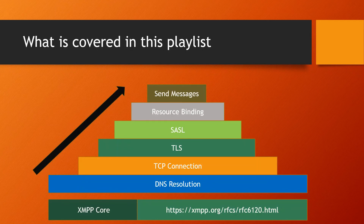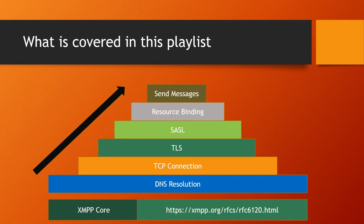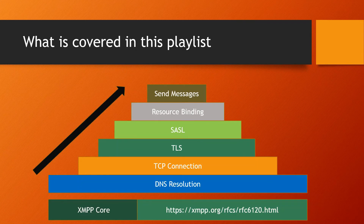What we're going to cover in this playlist is the connection process you go through to start sending messages. This is all covered in the RFC document, which you can visit. When you connect and put in your XMPP JID — your login credentials — what your client does is try to resolve the XMPP domain. What we get is an IP address and a port we can connect to using TCP. A TCP connection happens, and when we successfully connect, we establish a secure connection to exchange data safely so that we are protected from hackers.